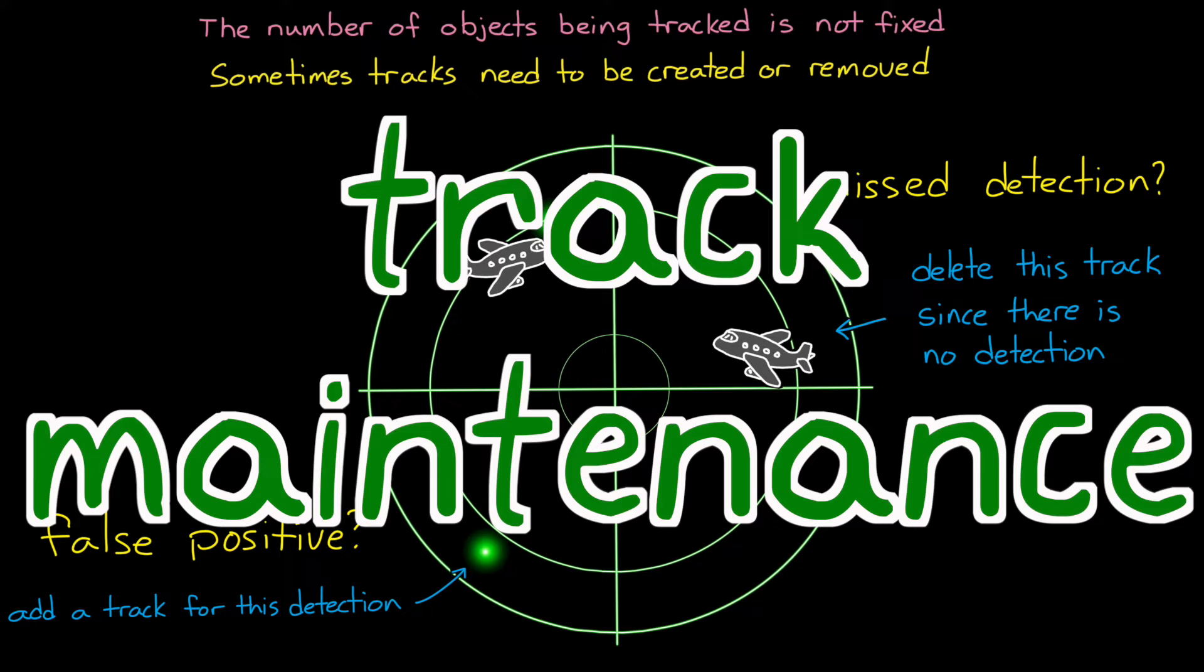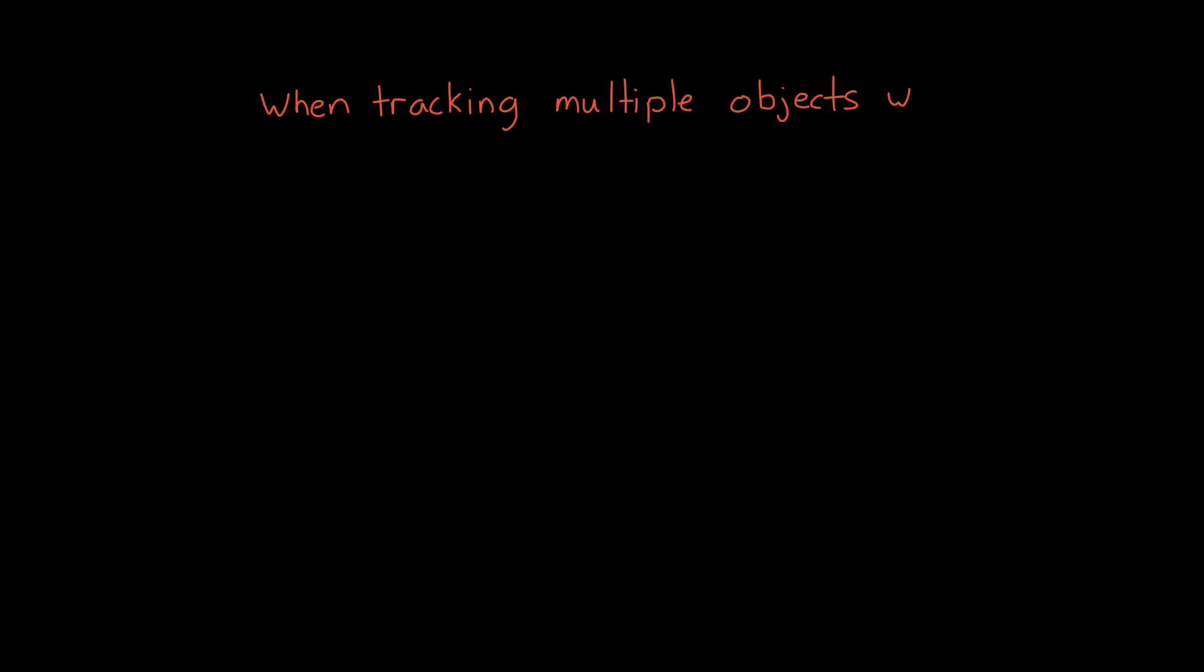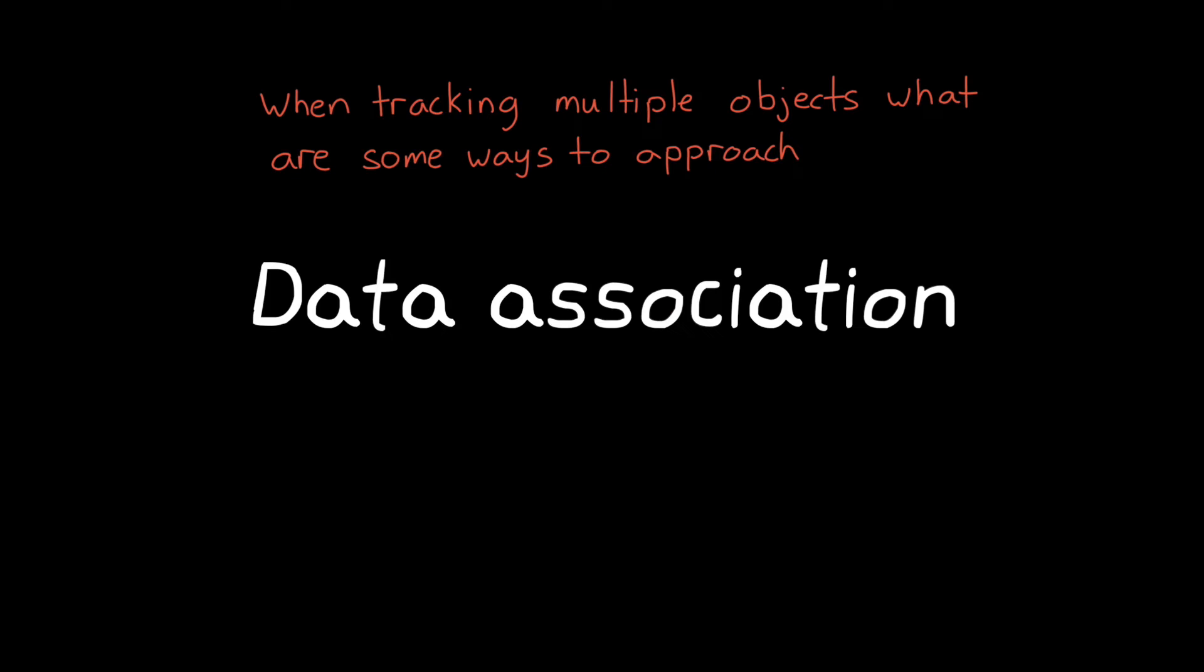So that's what we're going to cover for the rest of this video. When tracking multiple objects, what are some ways that we can approach data association? And what are some ways that we can address track maintenance?